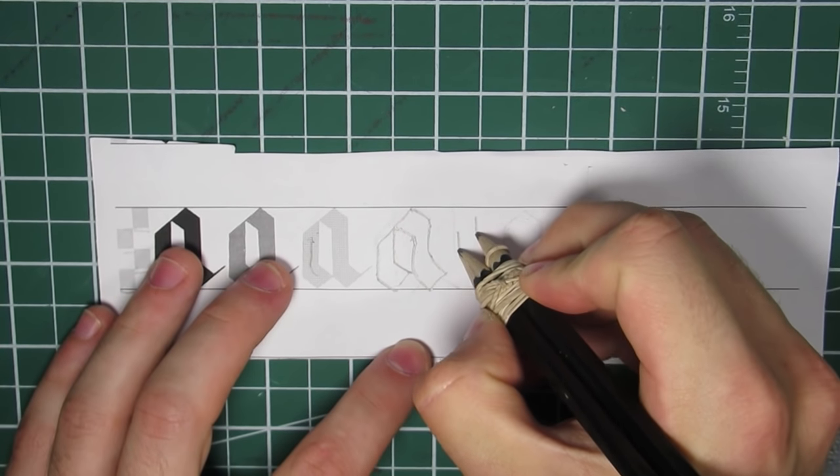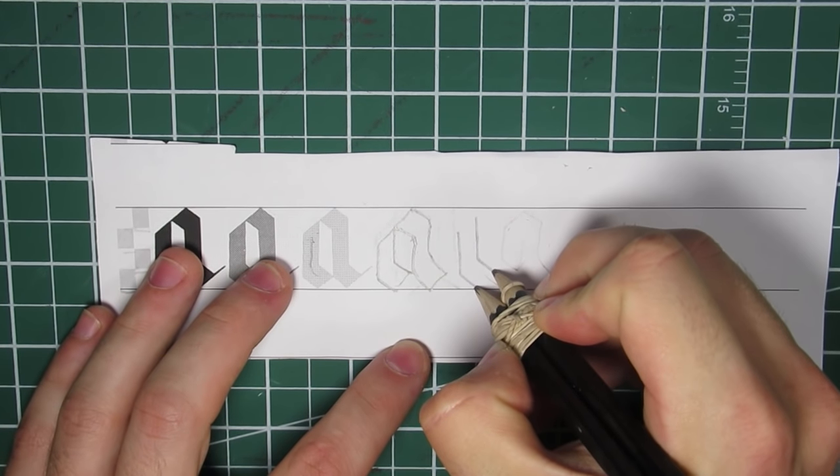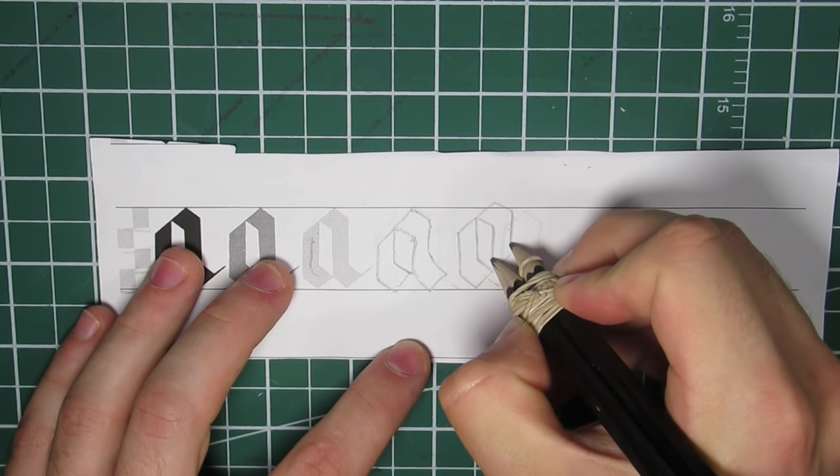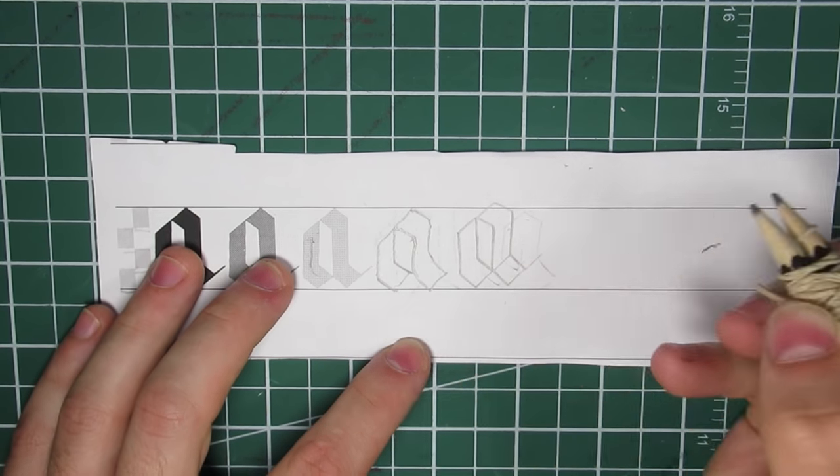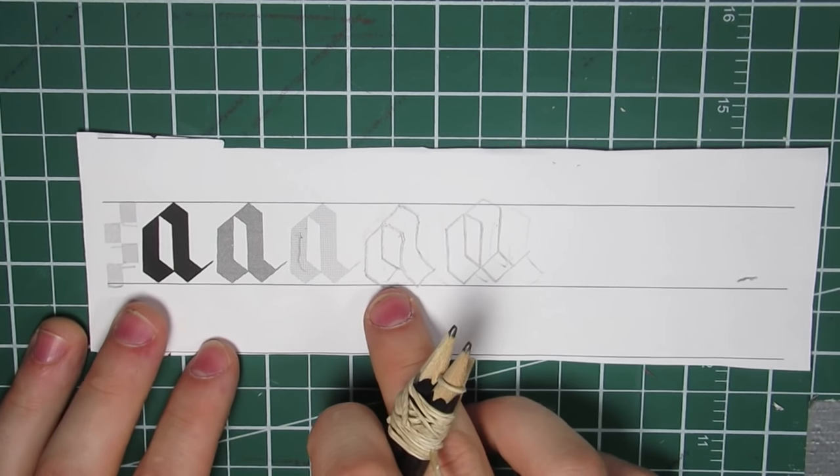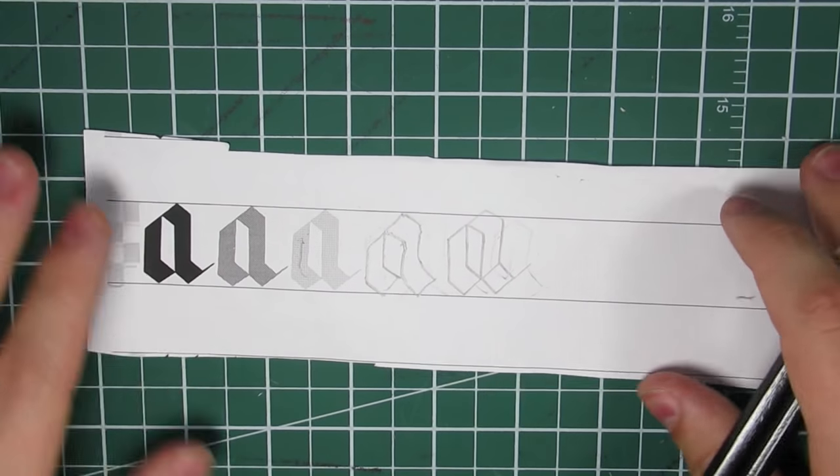Now if I was to do it right-handed, it's easier for me to do this. That's kind of what you want it to look like. But that's the order you would do it for a lefty.